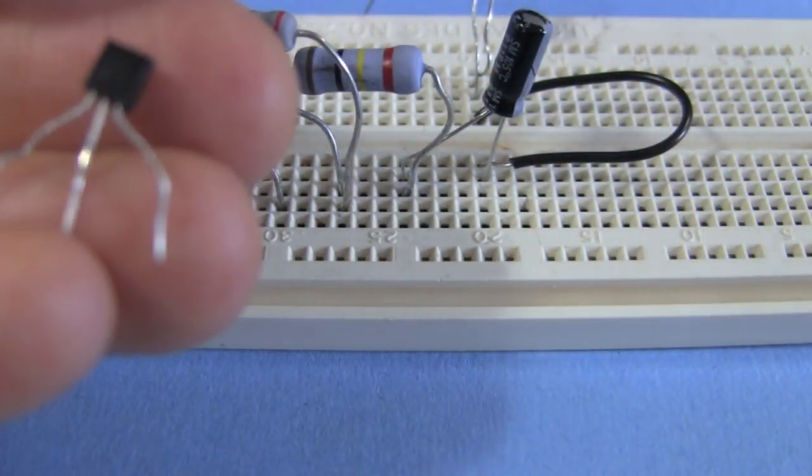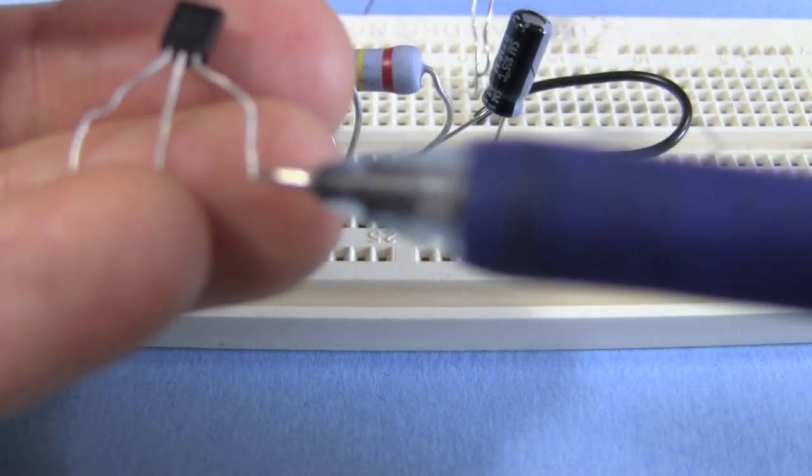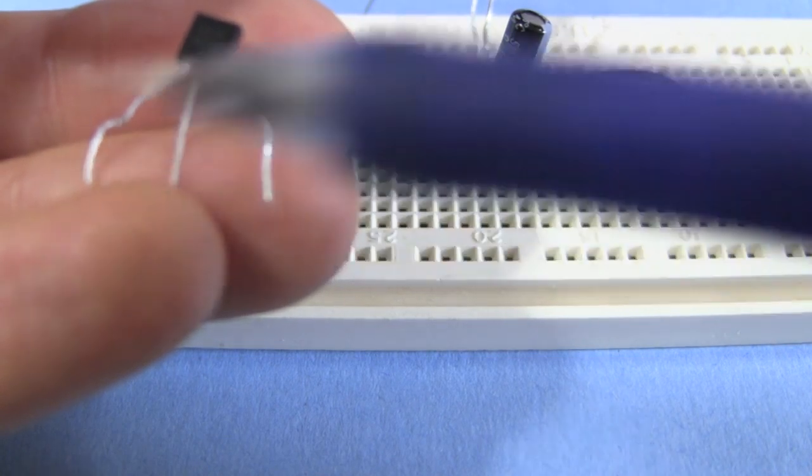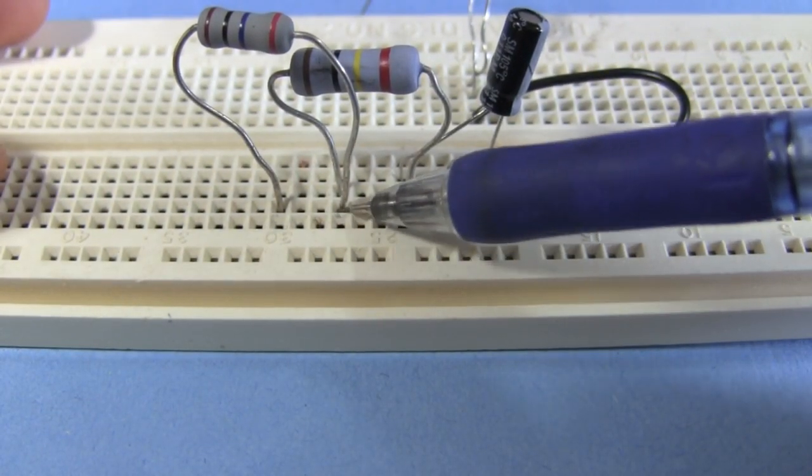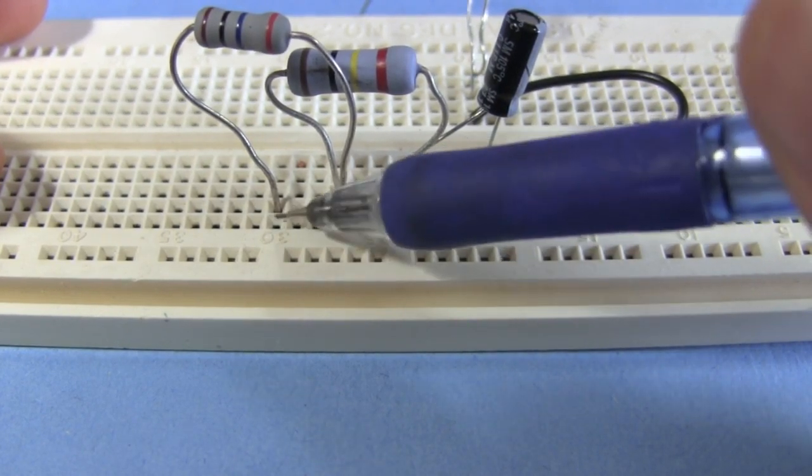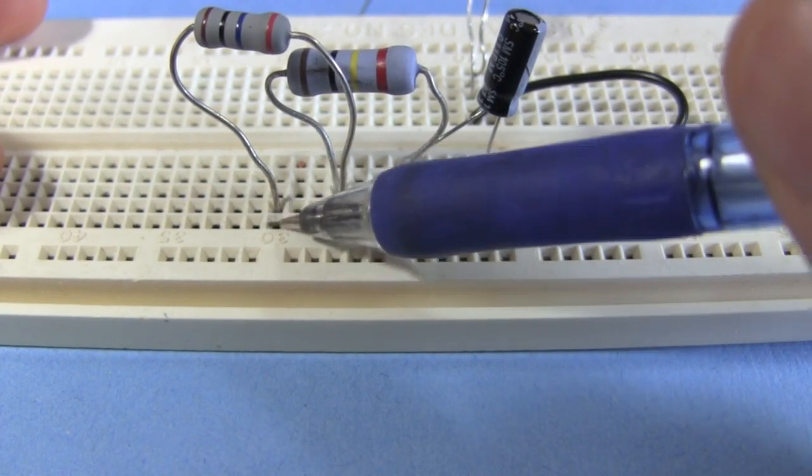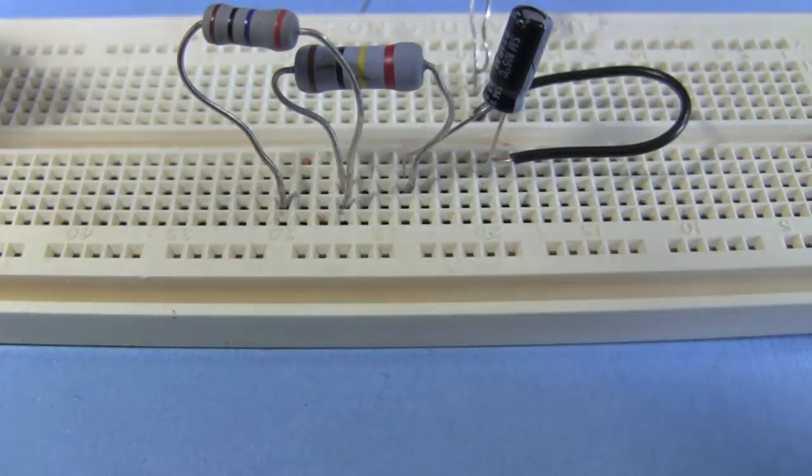Next up is the transistor. Spread the legs out apart. This is the collector. This is the base. This is the emitter. So the collector will go in the column next, in this row right here, where these two resistors both have connections. The base will go in this row here, where this resistor has a connection, and the emitter over here somewhere.